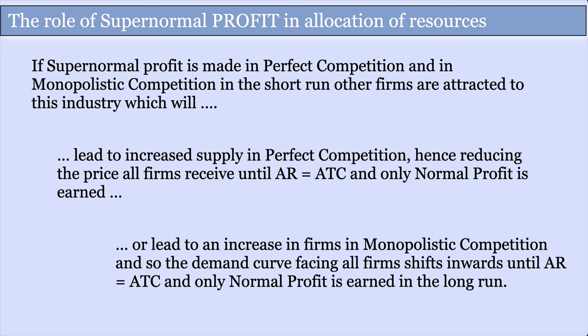In monopolistic competition, a similar thing happens, but you only have the one firm diagram. The demand curve facing the firm shifts inwards until AR equals ATC, the same as in perfect competition, and you only earn normal profit in the long run. You may need to wait until you've covered those two types of competition to fully understand this.